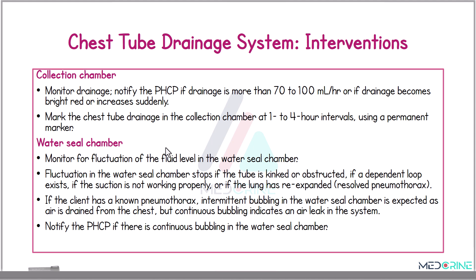When a patient has a chest tube drainage system in place, we need to implement a number of interventions. On the collection chamber, we monitor for drainage and notify the primary healthcare provider if drainage is more than 70 to 100 milliliters per hour, if drainage becomes bright red indicating active bleeding, or if it increases suddenly. We mark the chest tube drainage in the collection chamber at 1 to 4 hour intervals using a permanent marker.